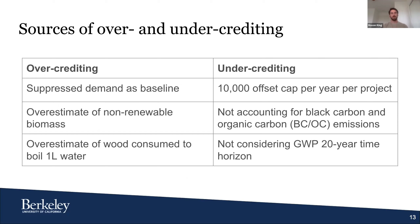As previously mentioned, the suppressed demand baseline is a source of over-crediting. Additionally, only CO2 emissions from the fraction of biomass considered to be non-renewable (NRB) are credited for emissions reductions under this methodology, and we found that the default NRB values project developers were using were significantly larger than what the scientific literature assumed NRB to be in these regions. Lastly, the mass of wood fuel assumed to be consumed to boil one liter of water we believe is an unrealistic estimate of actual wood fuel consumed.